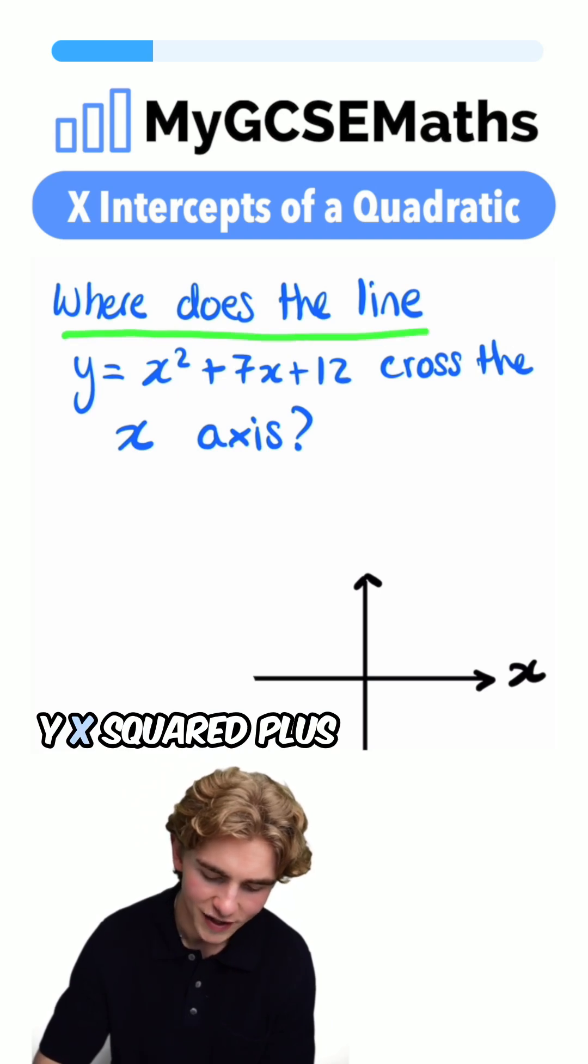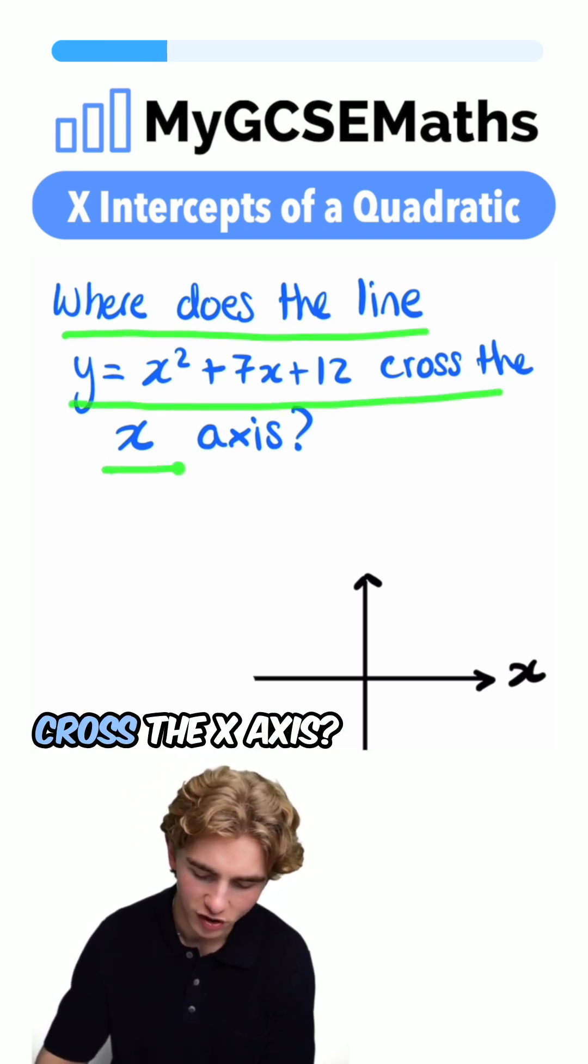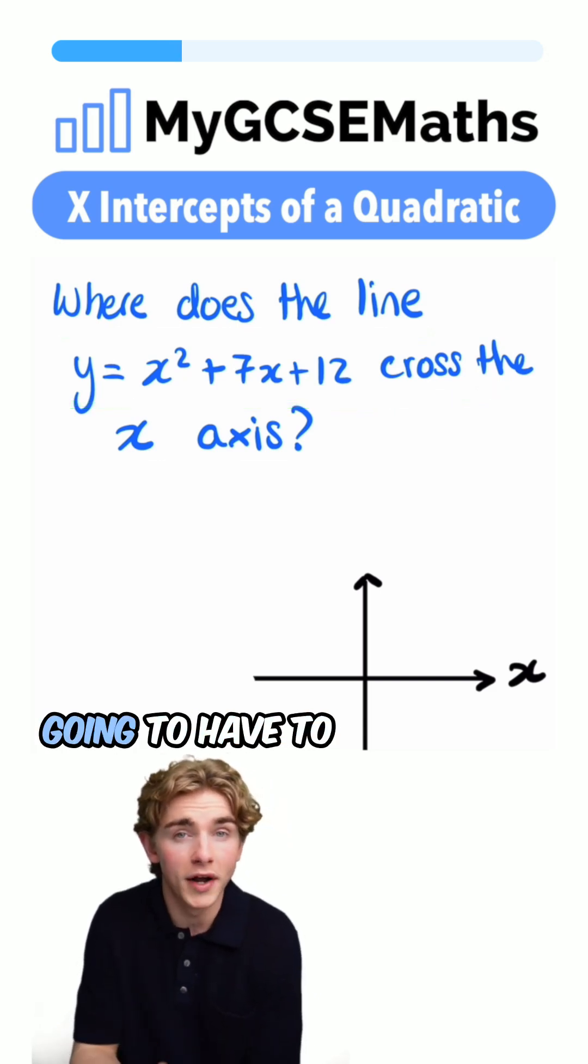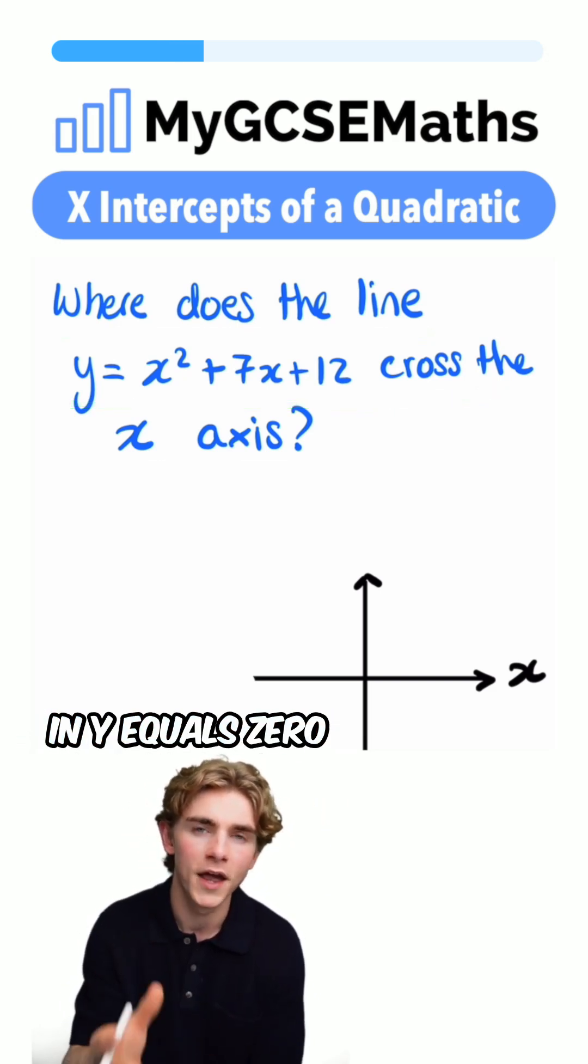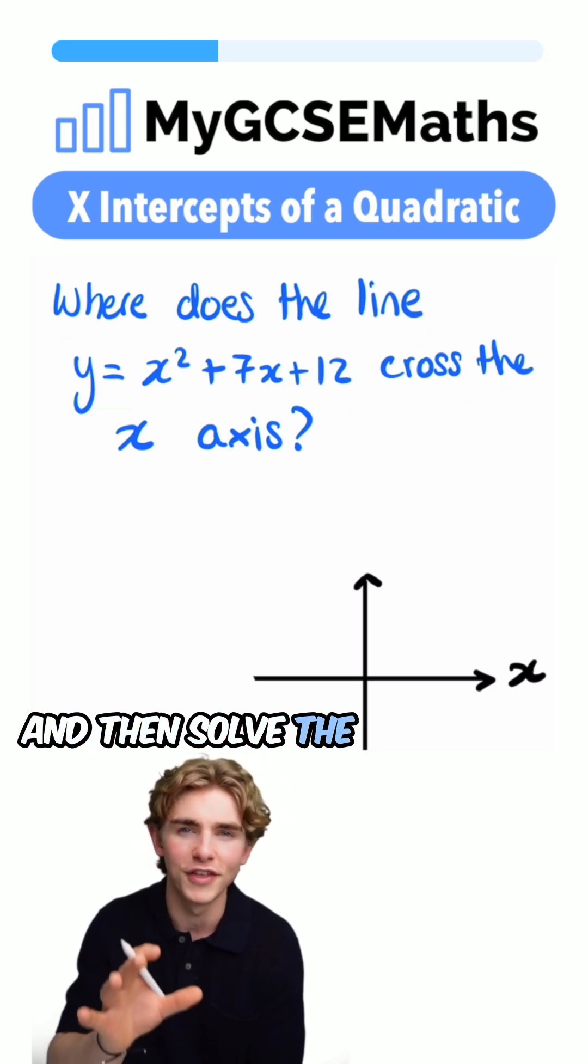Where does the line y equals x squared plus 7x plus 12 cross the x-axis? Now, what we're going to have to do to find this is substitute in y equals 0 and then solve the equation.